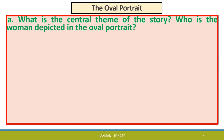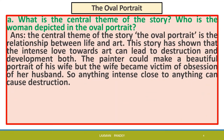What is the central theme of the story? The central theme of 'The Oval Portrait' is the relationship between life and art. This story has shown that intense love towards art can lead to both destruction and creation. The painter could make a beautiful portrait of his wife, but the wife became a victim of her husband's obsession. So, anything taken to an extreme can cause destruction.